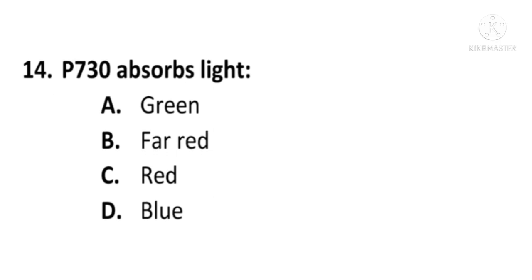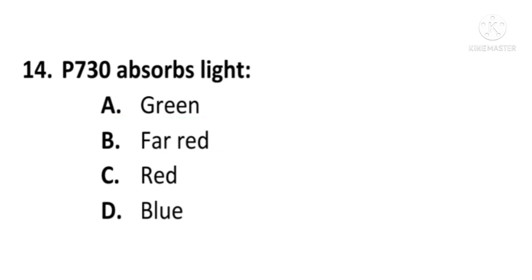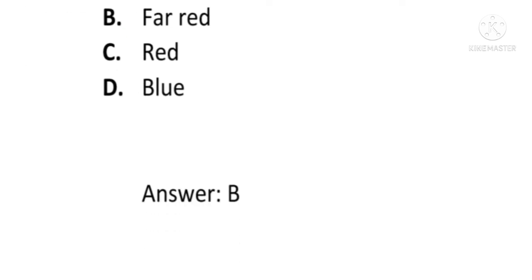Next question: Phytochrome 730 absorbs — A) Green light, B) Far-red light, C) Red light, or D) Blue light. The correct option is B, Far-red light. Phytochrome 730 absorbs far-red light; B is the correct option.